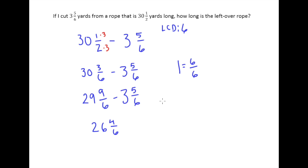But of course we know we're supposed to always give our answers in simplest form. And so since 2 is a common factor of 4 and 6 I can divide top and bottom by 2. And we end up with the answer of 26 2/3 yards of rope left.